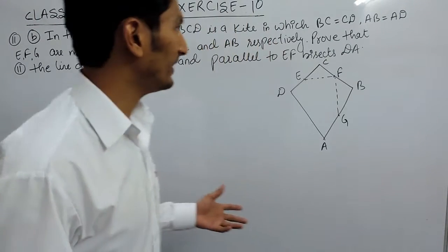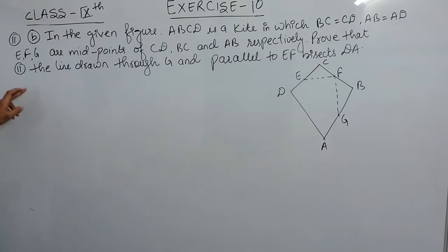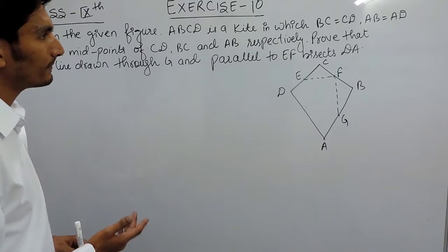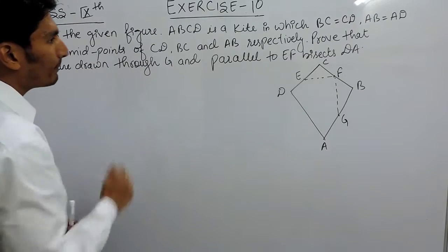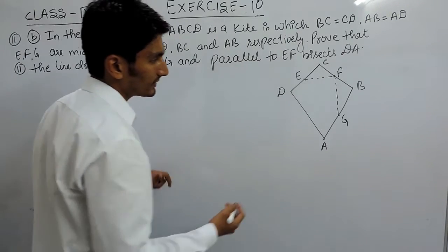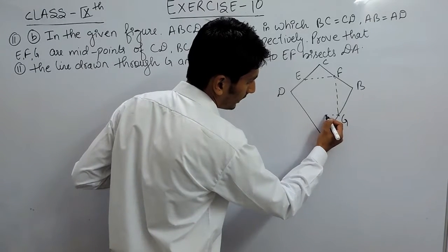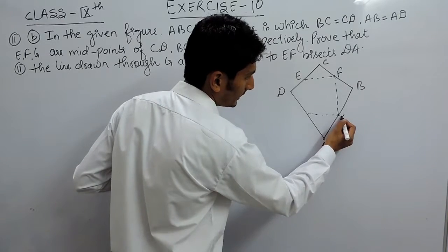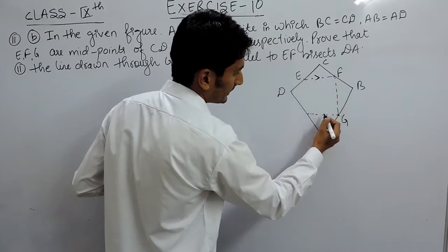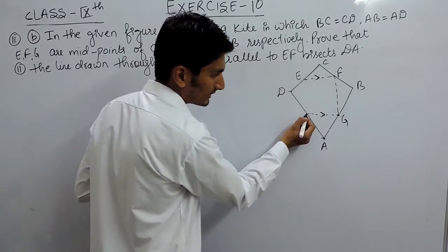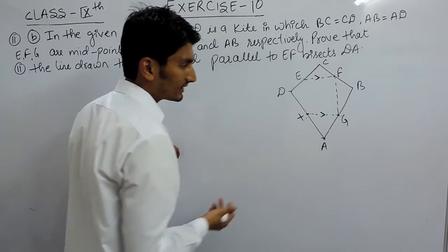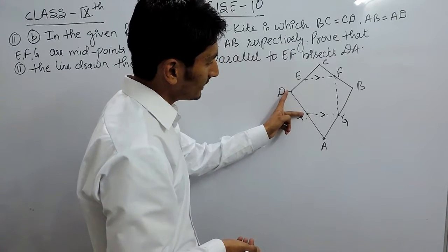Hello everyone. In this video we are going to solve the second part of question number 11. In this question you are given a quadrilateral ABCD, and you have to prove that the line drawn through G and parallel to EF bisects DA. So if I draw a line through G which is parallel to EF, this line should bisect DA — meaning this point X divides DA into two equal parts.